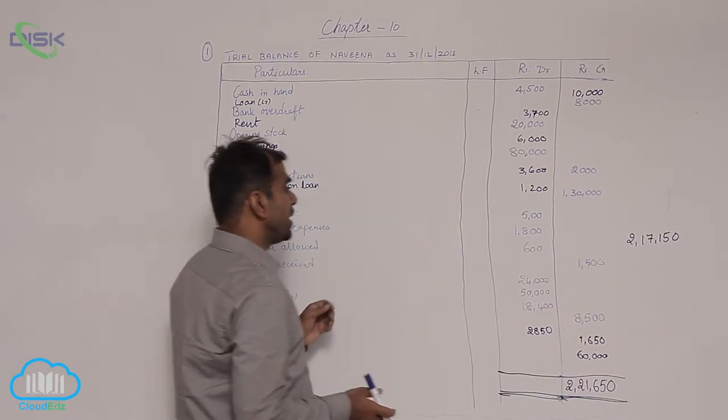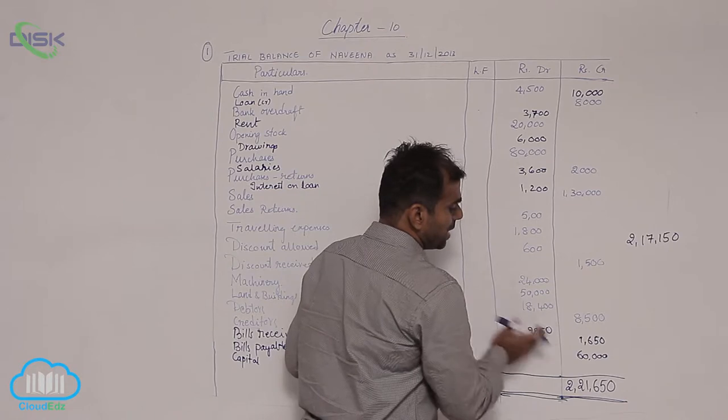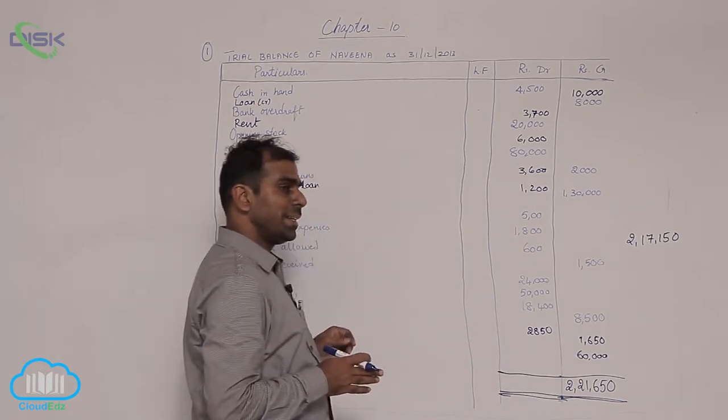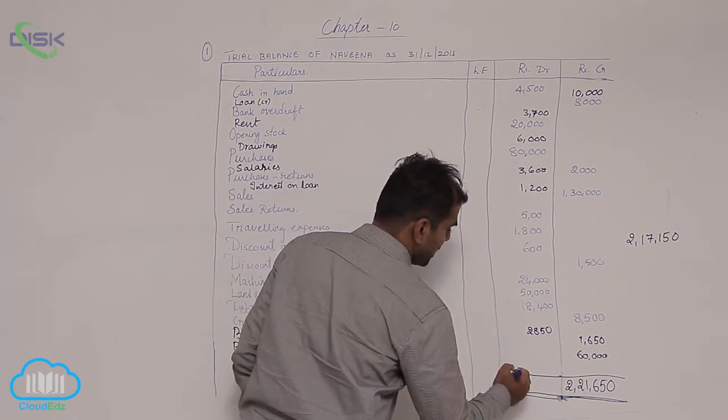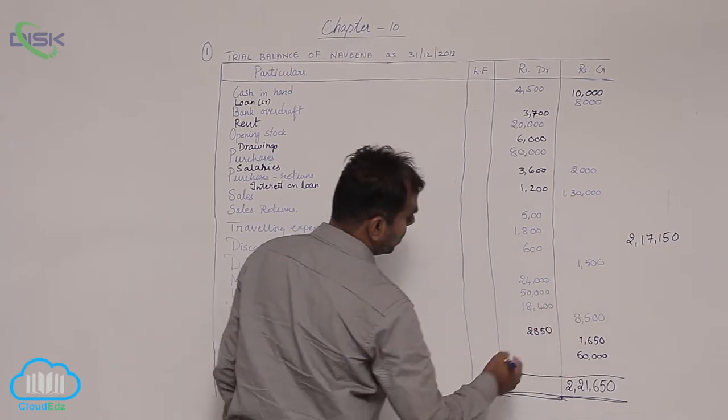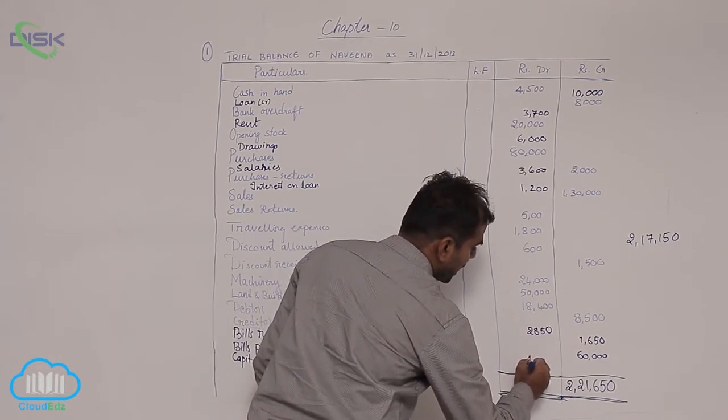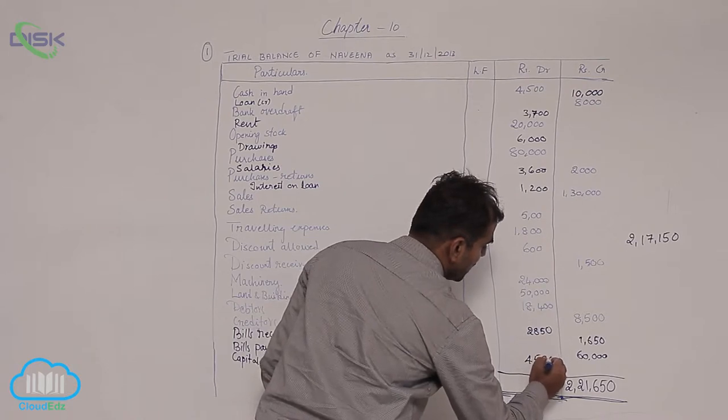Now what is suspense? When we do trial balance and if both sides do not agree, then we put the difference. So what is the difference here? It is 4,500.